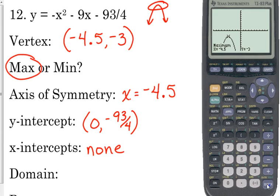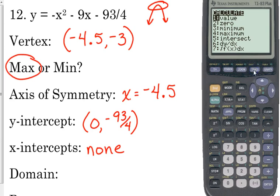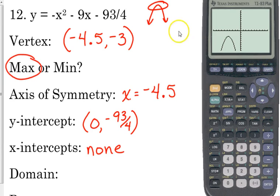But if it did have x-intercepts, remember how we would find them. We go to second trace, and it's number 2, zero, because that's where the function equals 0, where the y-coordinate is 0. So that's how we find the x-intercepts. And we do the same thing that we do with the maximum. Left bound, right bound, and then we find it.